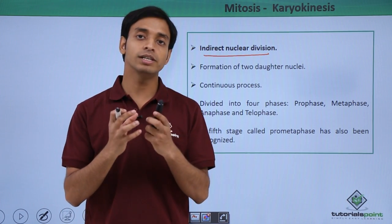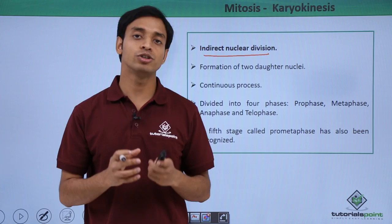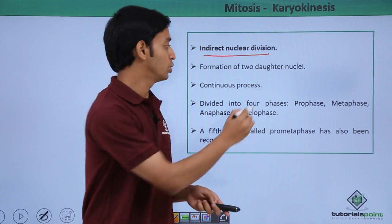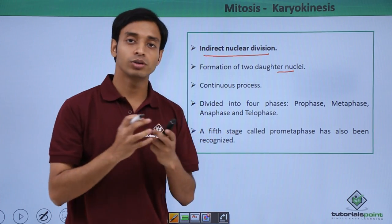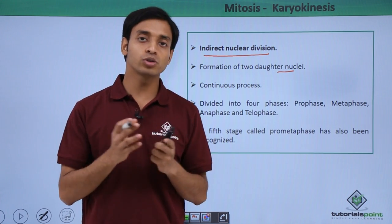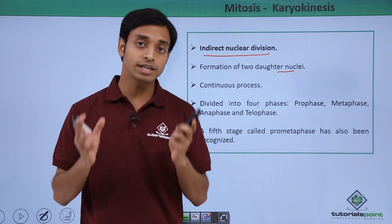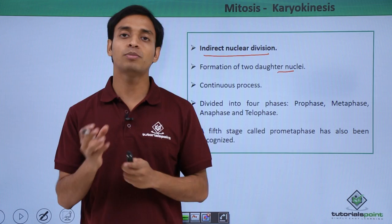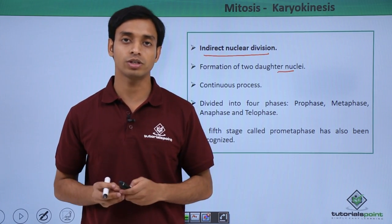The parental nucleus divides into two daughter nuclei. New daughter nuclei are formed because of the process of karyokinesis. This process is a continuous process without any pauses in between.